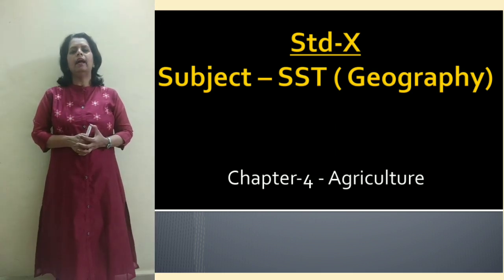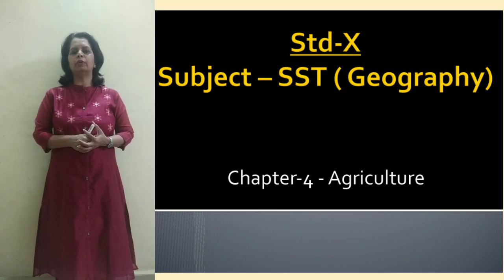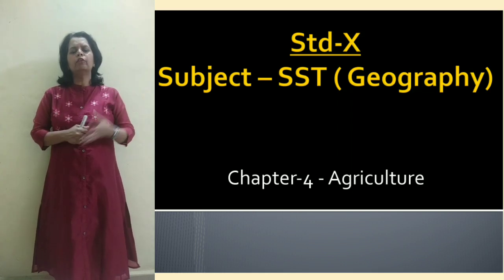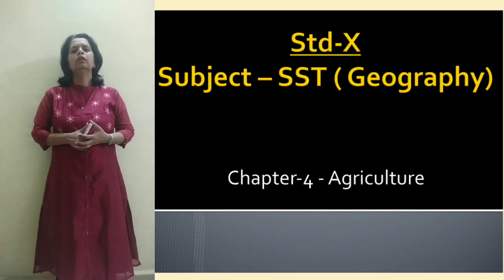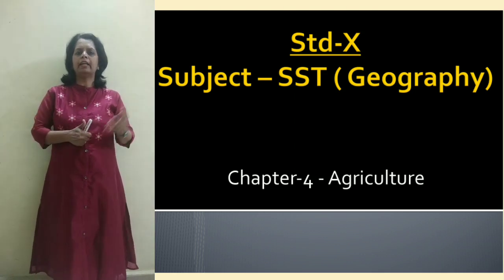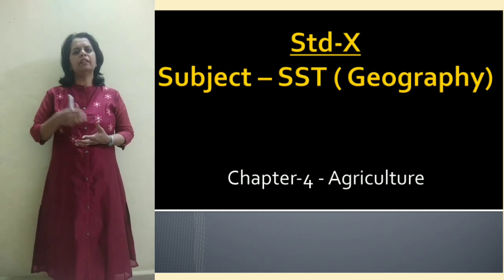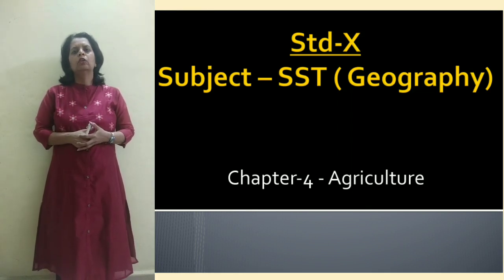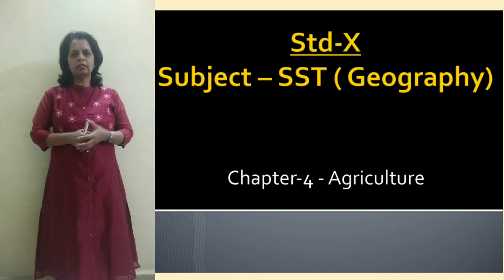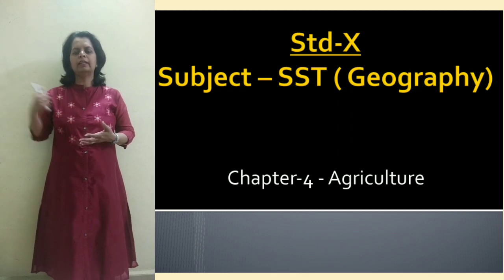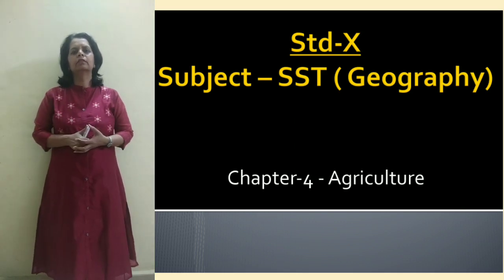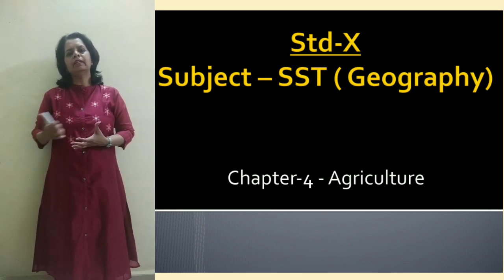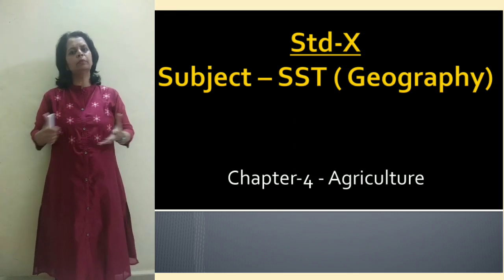Let's start our topic — agriculture. India is an agriculture country. 60% of the people depend on agriculture for their livelihood, and agriculture is considered to be the backbone of India's economy. In this particular topic, we will discuss about agriculture, varieties of food crops and cash crops being grown, and the steps and initiatives taken by the government to boost agriculture. It's divided into three broad categories: types of farming, varieties of food and cash crops, and institutional and technological reforms taken by the government.